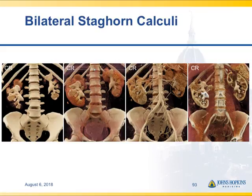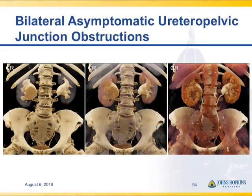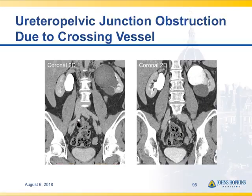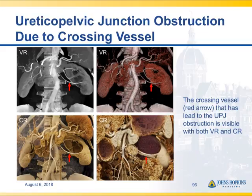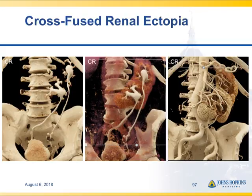This case of bilateral asymptomatic UPJs very nicely shows the transition and that there's no mass present with cinematic rendering. Here's a UPJ obstruction due to a crossing vessel — you can see the dilated left renal pelvis, and as you go to 3D, look at the relationship of the multiple left renal arteries. It's shown much more clearly on the cinematic rendering — you can see the orientation of the vessels, the stretching, and really the site of obstruction. Just a very nice example with very good information.